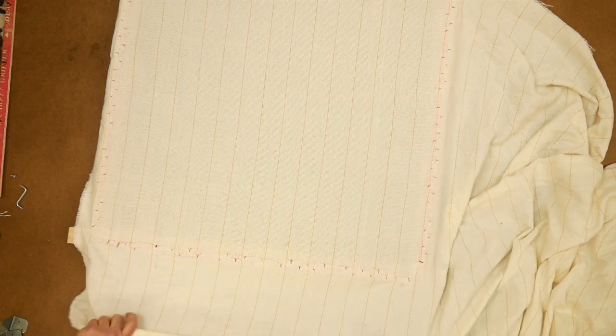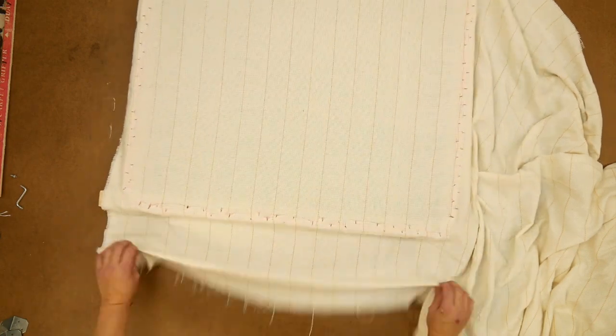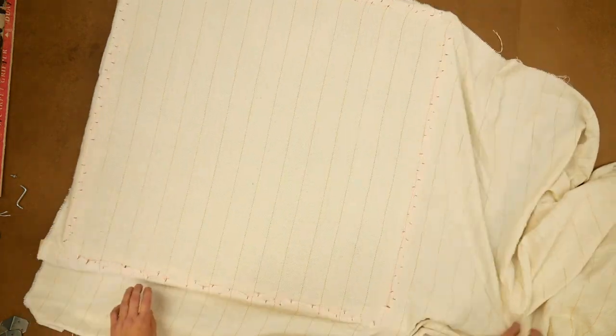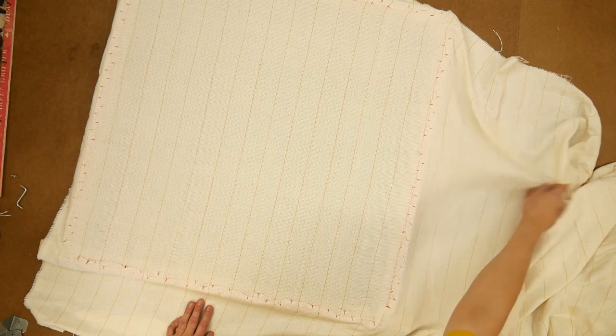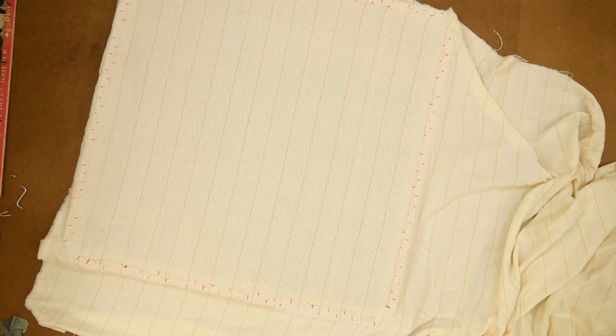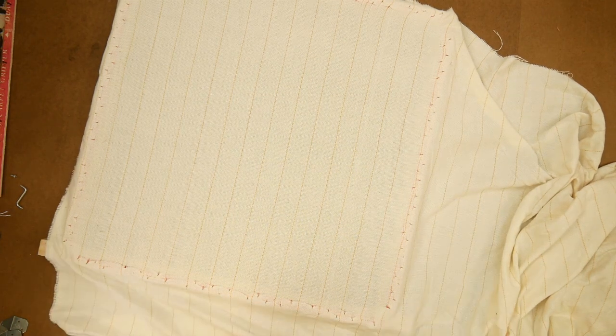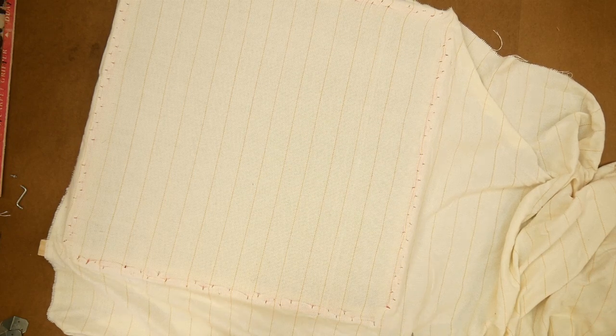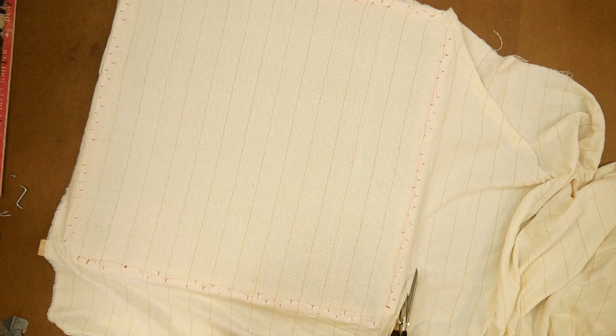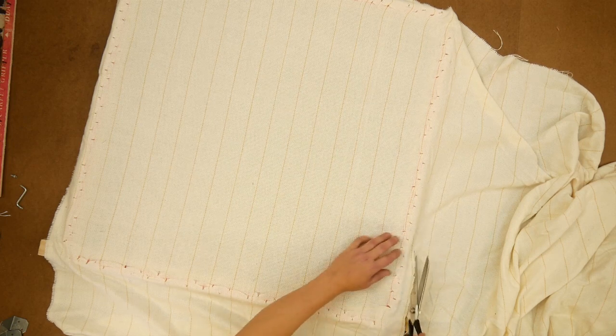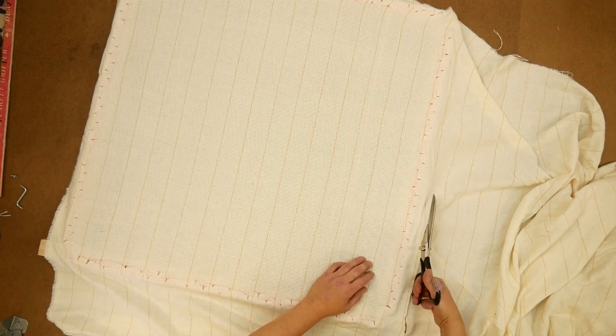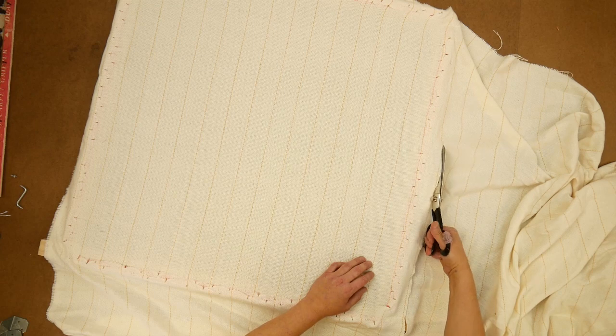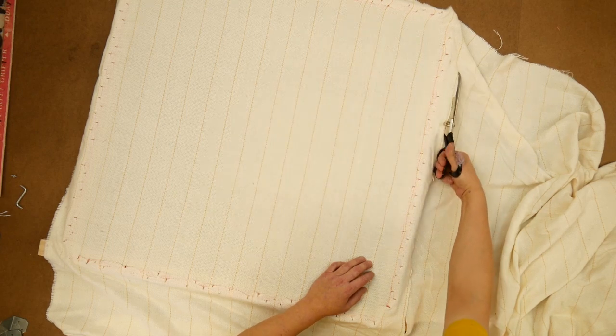Now I have obviously a lot extra at the bottom and a lot extra on the side, and now you can cut that off. You don't want to cut it super close to the edge, but you want this to maybe a couple of inches. On our tufting cloth the lines are two inches apart, so you want to give yourself a couple of inches.